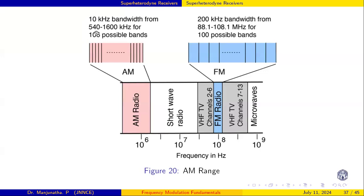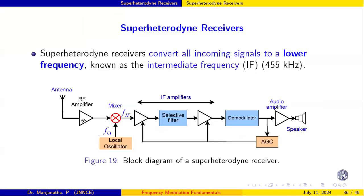Similarly for FM, the range is 88 to 108 megahertz. 200 divided by 2 gives 100 bands available. The receiver has to tune for all these carrier frequencies. For AM, the receiver must work from 540 to 1600 kHz, and for FM it must work across the FM range to demodulate those signals.